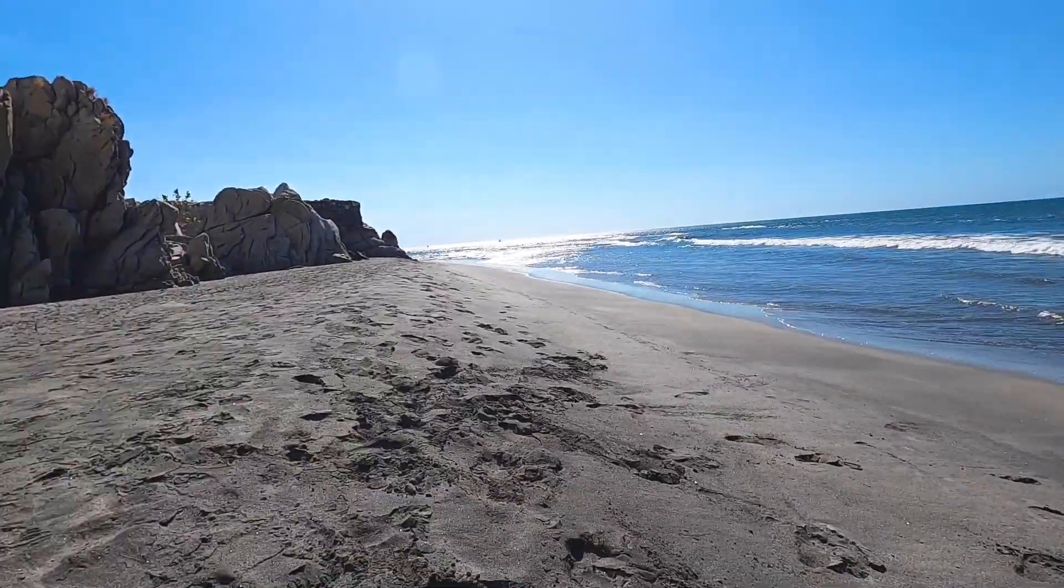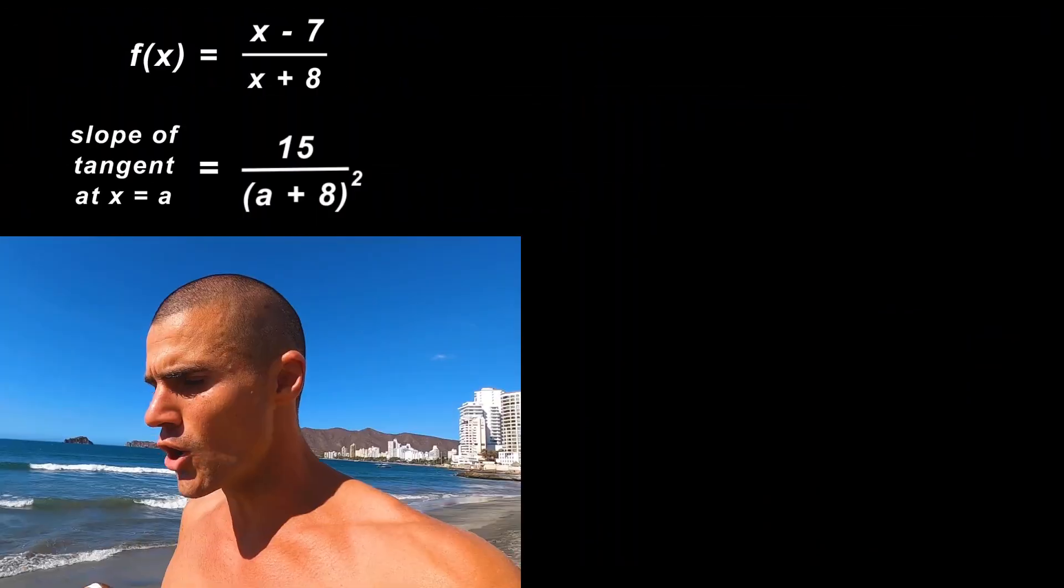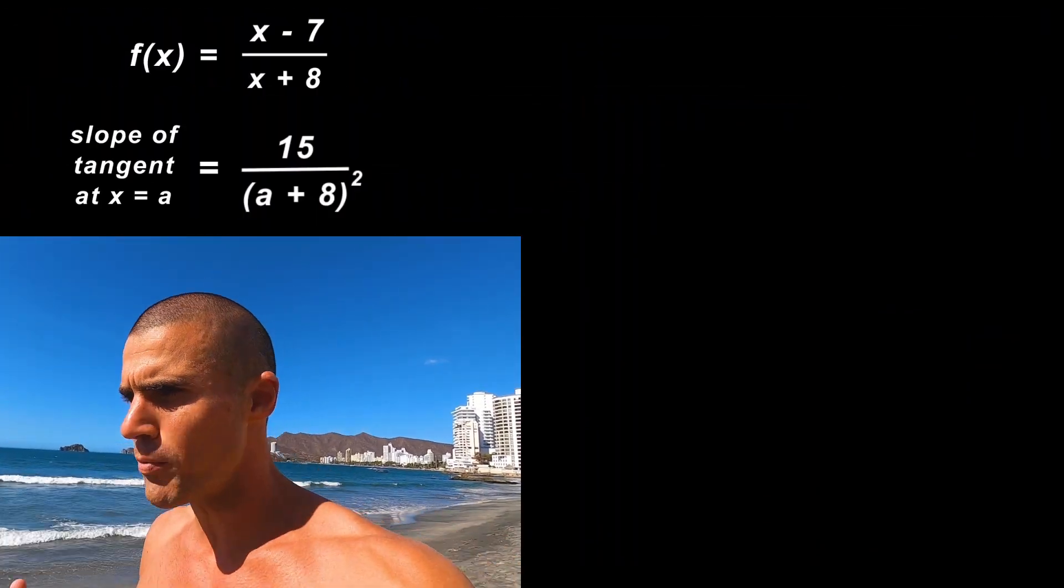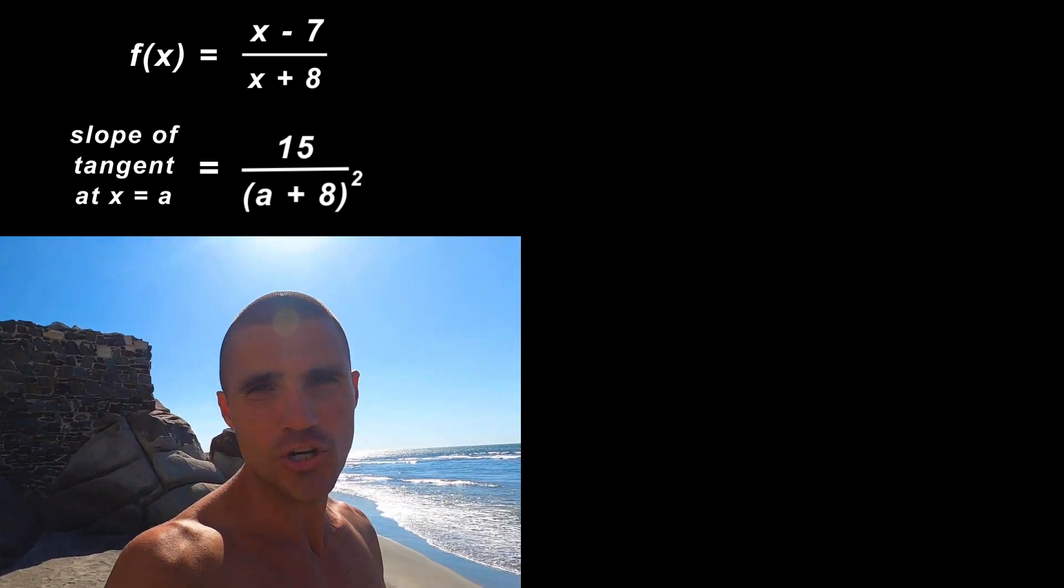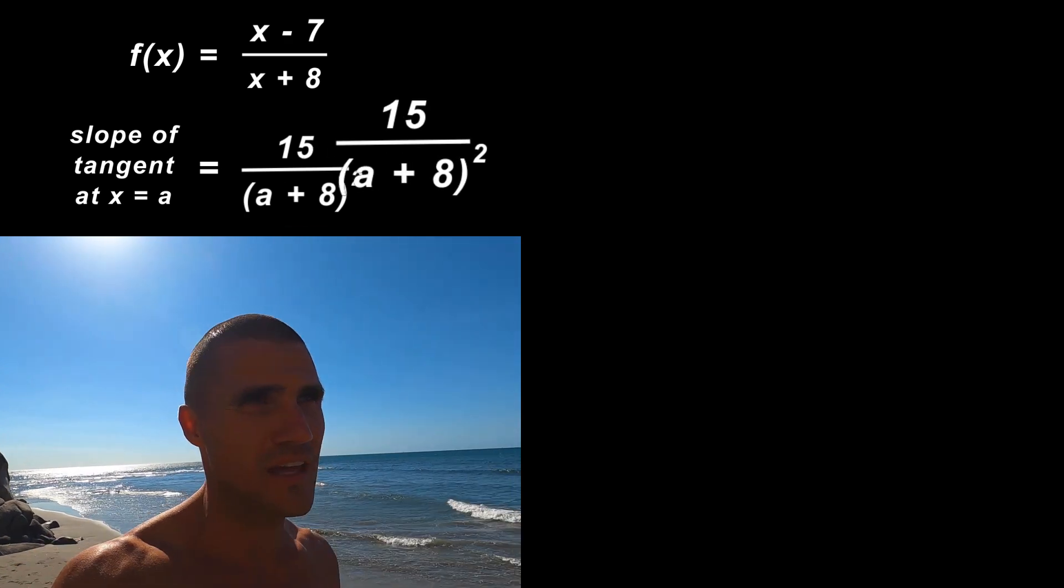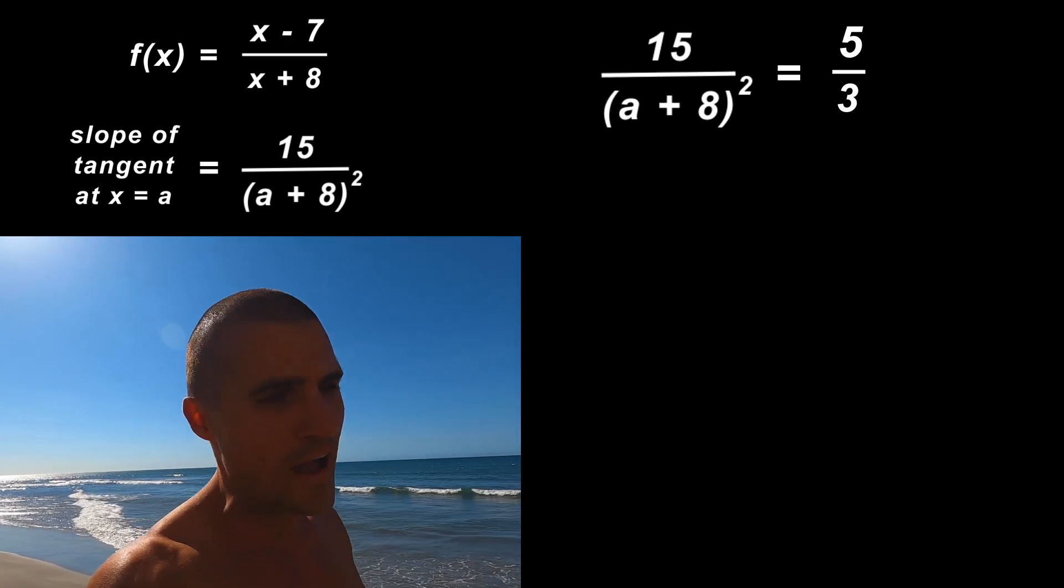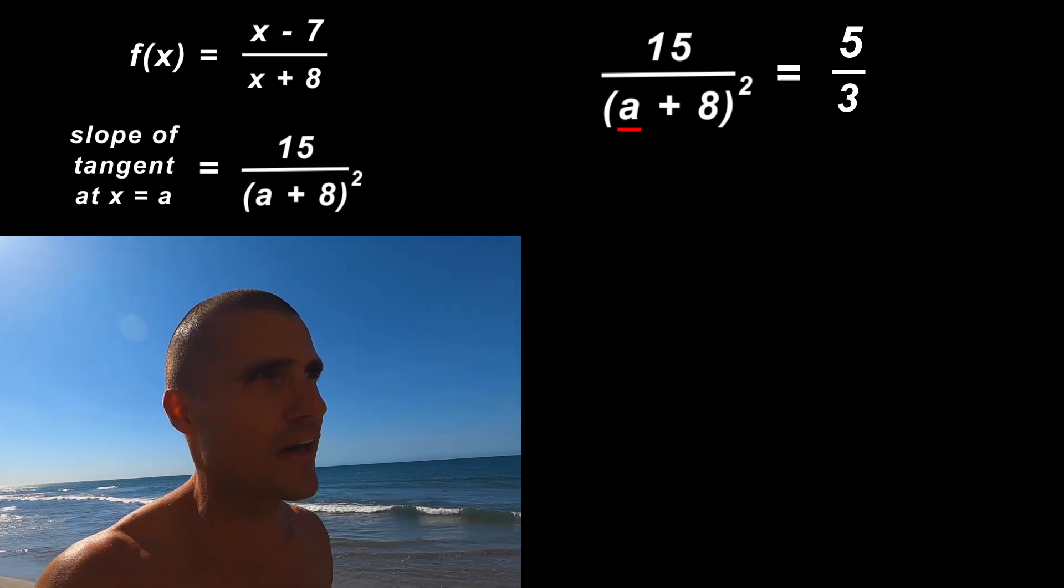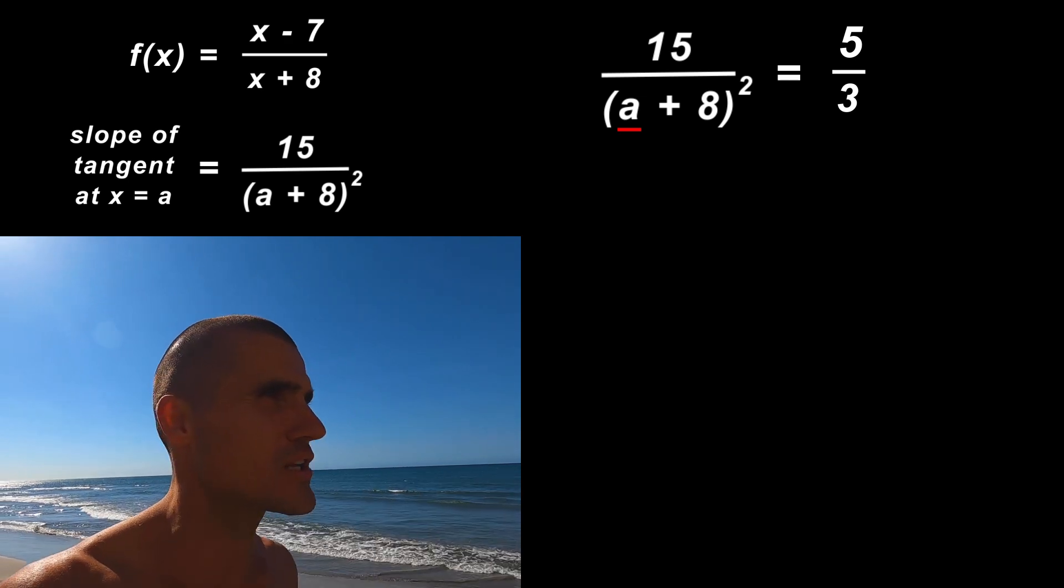So where it was before is down there, El Rodadero beach. There's just these little areas to chill, and usually they're just purely empty. Alright, so let's do part B to the question. The way we would solve for these points is we can basically make the expression for the slope of the tangent that we got earlier, make that equal to 5/3, and then we could solve for the a values. That's going to give us the x values where the slope of the tangent is going to be 5/3.